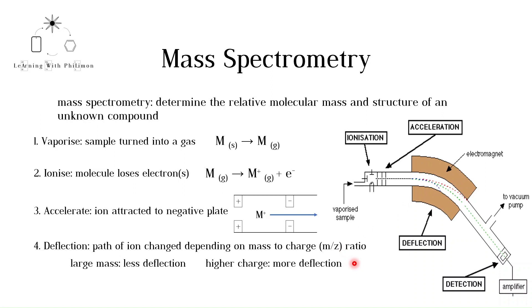The larger the charge of the ion, the greater the force experienced, so the larger the deflection. The blue dotted line represents more deflection, where the path is more curved.